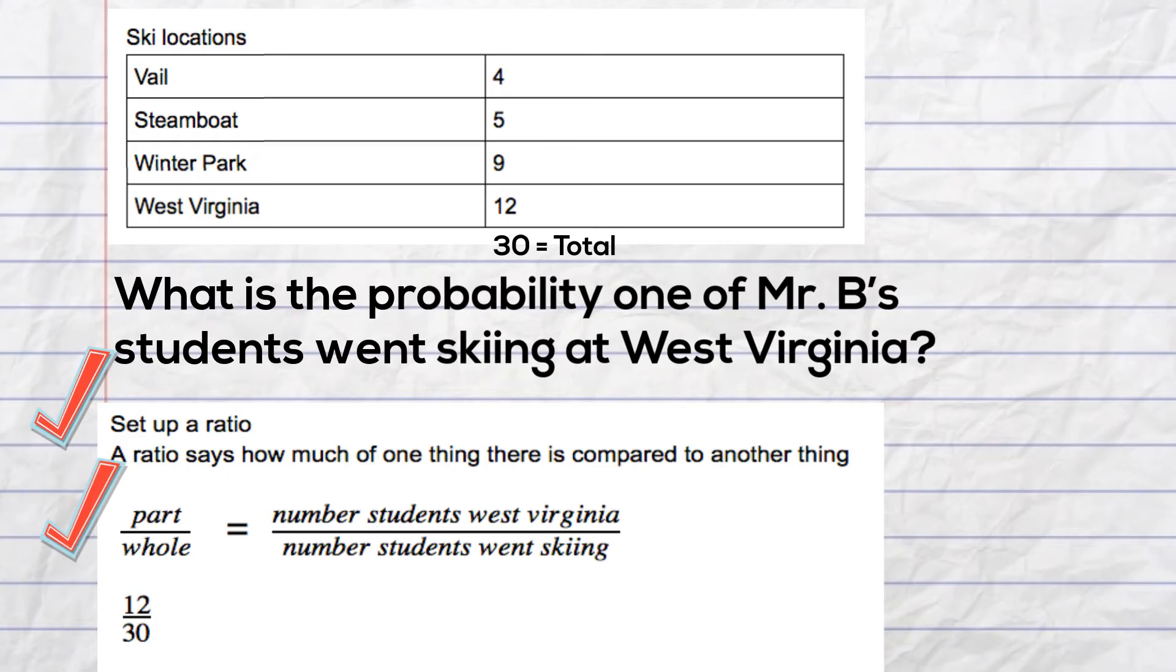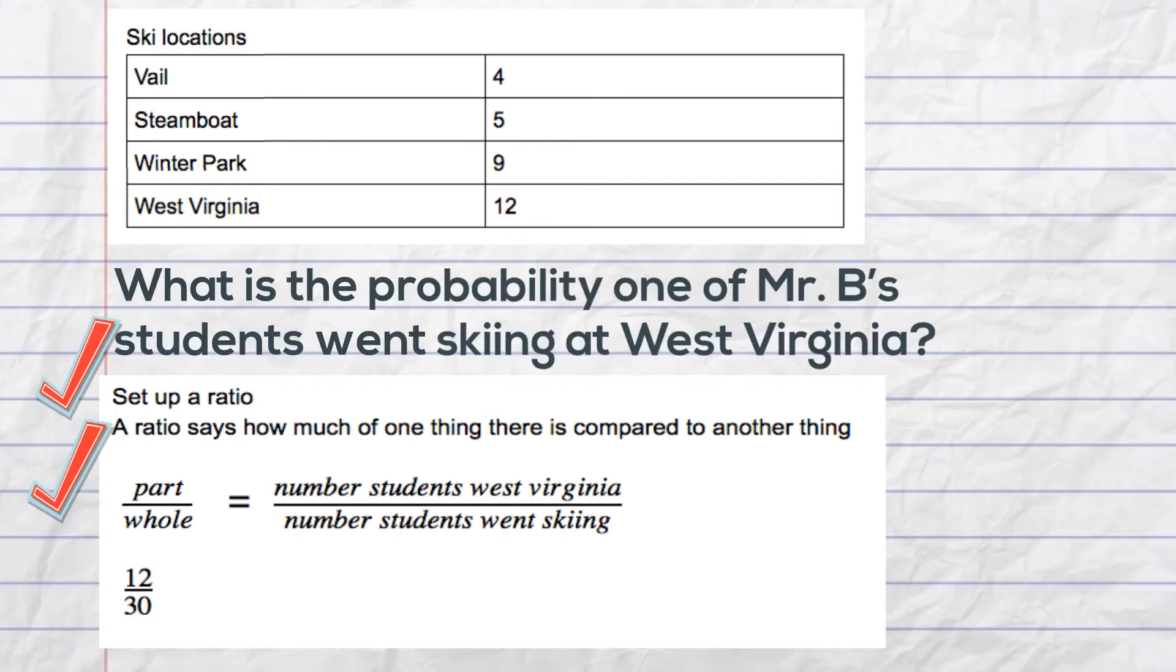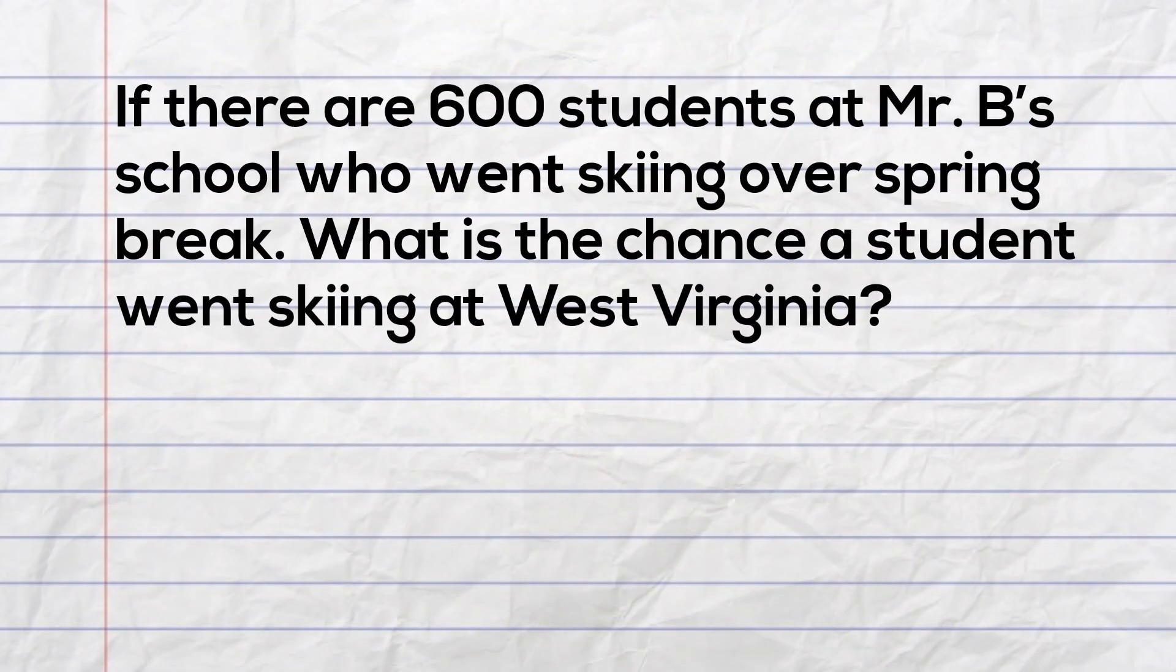In this case, it will be 12 over 30. Now we can apply that to this problem. If there were 600 students at Mr. B's school who went skiing over spring break, how many students went skiing at West Virginia?